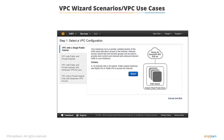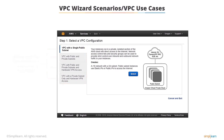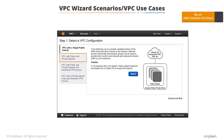When you open the VPC wizard, it shows four scenarios representing four basic network topologies. You need to select the one that resembles the topology you wish to create: VPC with a single public subnet; VPC with public and private subnets; VPC with public and private subnets and hardware VPN access; and VPC with a private subnet only and hardware VPN access.